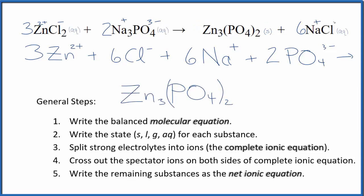And then sodium is positive, chloride is negative. So we'll have our six sodium ions, and then we'll have six chloride ions as well. So this is our complete ionic equation.